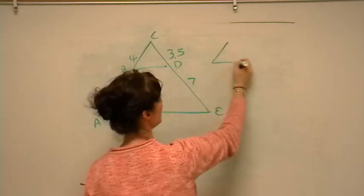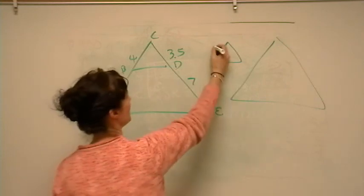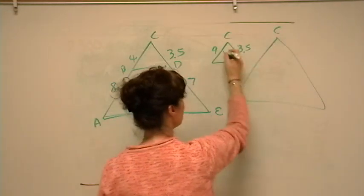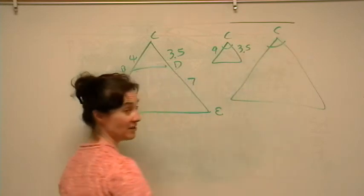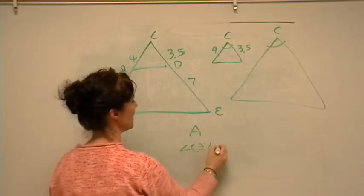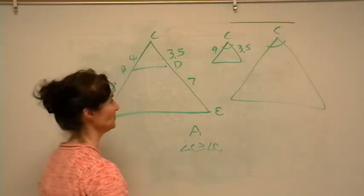So if you kind of separate these triangles, it's a little bit easier. We've got 4 and 3.5, and this is angle C up here. Notice that angle C is congruent to itself. So there's your angle right there in the middle. Angle C is congruent to angle C. Remember, angles are congruent, sides are proportional.